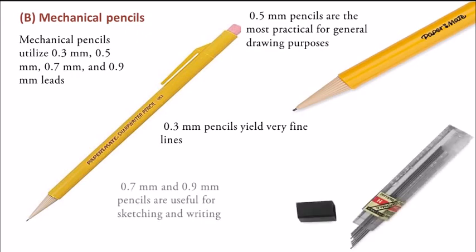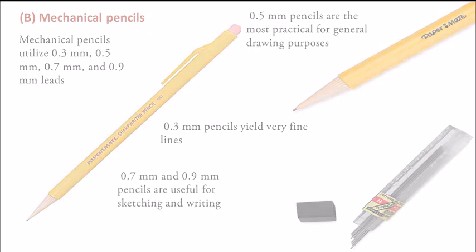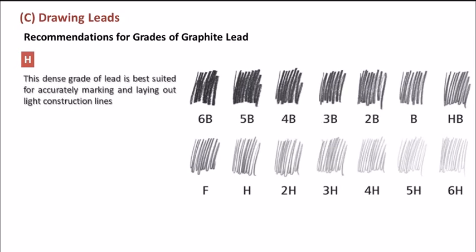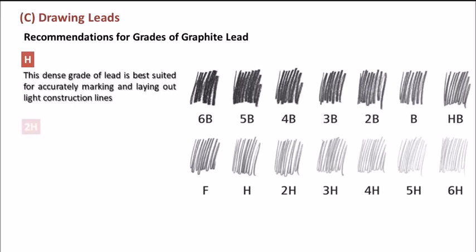0.7 and 0.9 pencils are useful for sketching and writing. Now drawing leads - these are the different recommendations of drawing leads. First is H grade, a tenth grade of lead suited for marking and laying out light construction lines. Then we have 2H grade.